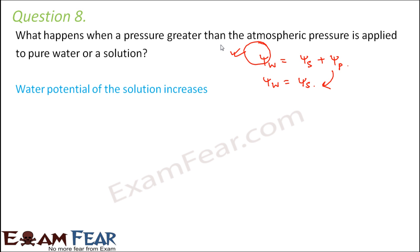Some important concepts from this lesson deserve special attention: solute potential and pressure potential — do not get confused between them. The concept of transpiration pull and the pressure flow hypothesis are also key concepts to understand. Please pay extra attention to those. If you have any doubts, feel free to ask. This was all about transport in plants — see you in the next lesson. Thank you.